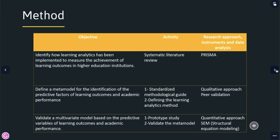In order to respond to the first objective, we will carry out a systematic literature review. The second objective is to define a metamodel for the identification of the predictive factors of learning outcomes and academic performance.